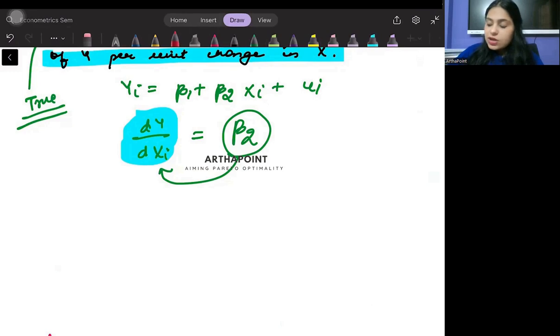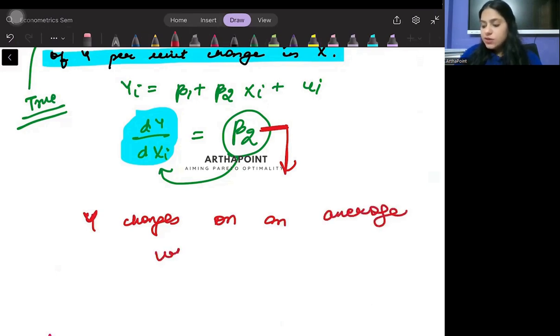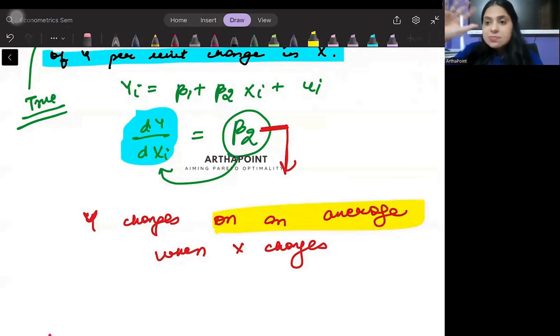Rather we go ahead and we say that this beta 2 is the amount by which y changes on an average when x changes. So we use this term called on an average, and this tells us how y changes in its mean value, in its average value, when x changes.